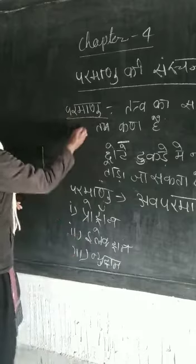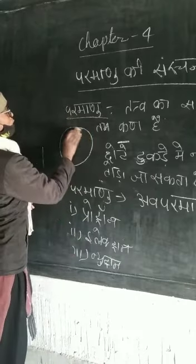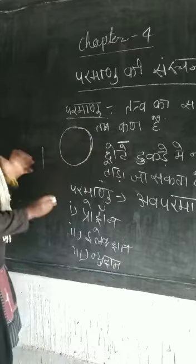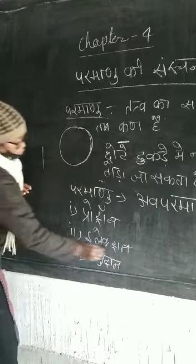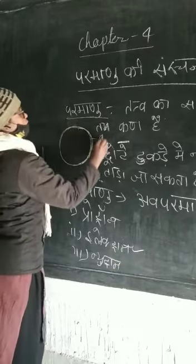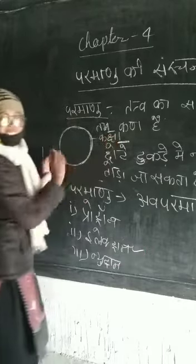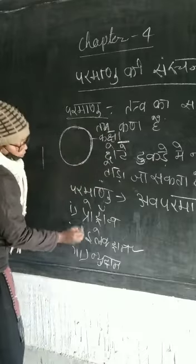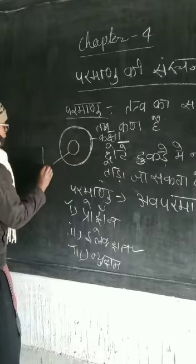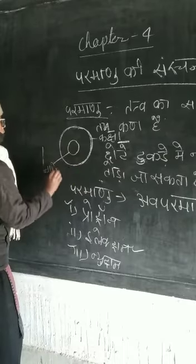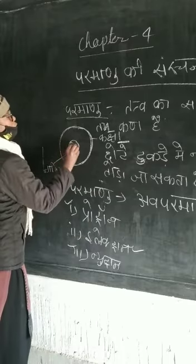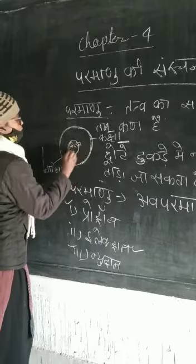Now this is the circle in a circle, right? This is the circle in a circle. So the electron is the circle in a circle, and proton and neutron. We're going to try between the proton and the neutron.